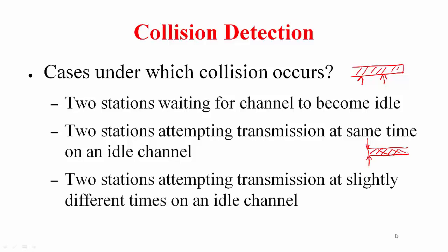The third case is a bit tricky. I claim that two stations attempting transmissions at different times on an idle channel can also collide. How can this happen? What characteristic of the channel can be responsible for this? Propagation delay.